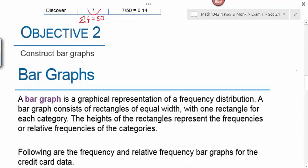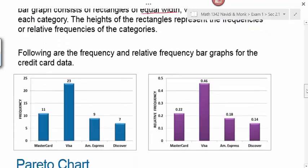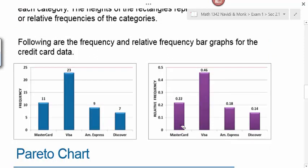Objective two is to construct bar graphs. A bar graph is a graphical representation of a frequency distribution. A bar graph consists of rectangles of equal width, and that's important that the width be equal on those bars, with one rectangle for each category. The heights of the rectangles represent the frequencies or relative frequencies of the categories. On a bar graph, you'll notice that the bars don't touch. In the next section, we're going to look at a bar graph for quantitative data, and that's called a histogram. And on the histogram, the bars do touch. So, if you see a bar graph where the bars aren't touching, you know right away that that represents qualitative data.